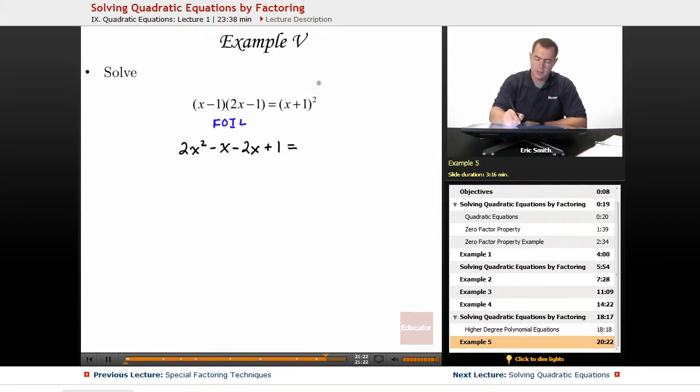Over on the right side of this, this is the same as (x + 1) times (x + 1). So again, we're going to use FOIL to help us really spread this out. Our first terms on that side, x times x, x squared. Outside terms, x. Inside terms, x. And last terms, 1 times 1, 1.